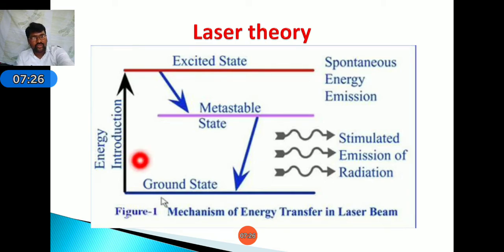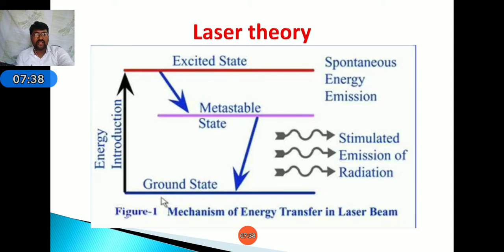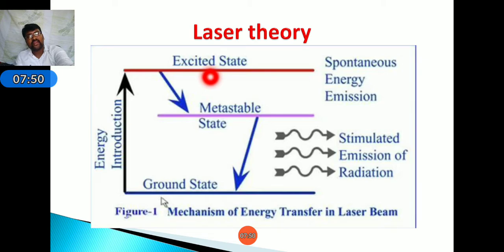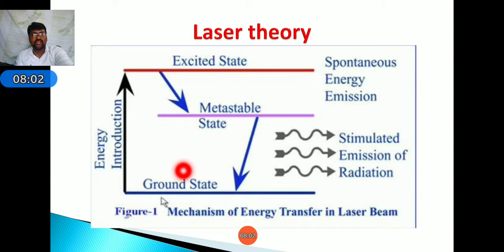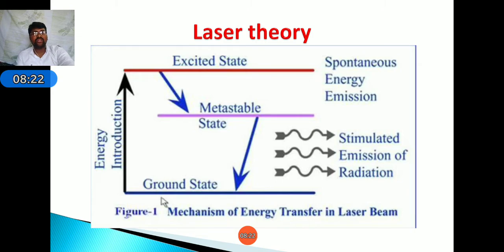In the diagram, the ground state and excited state (higher energy level) are shown. Atoms in the ground state absorb a photon of light energy, and excitation takes place — electrons move from ground state to excited state. After some time they return to ground state. The process continues; the atoms gain more energy and reach a condition known as the metastable state, where stimulated emission of energy occurs. This energy creates the laser beam used for machining.